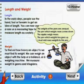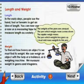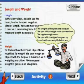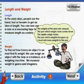Length and weight. In the early days, people used the hand, foot or forearm to get an idea of length. You can now use a ruler or a measuring tape to measure length accurately.